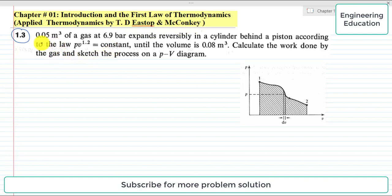Statement of the problem is: 0.05 cubic meter of a gas at 6.9 bar expands reversibly in a cylinder behind a piston according to the law PV^1.2 equals constant.